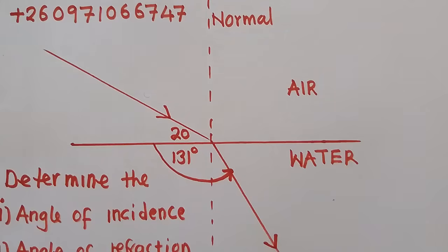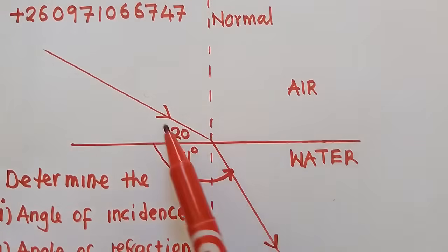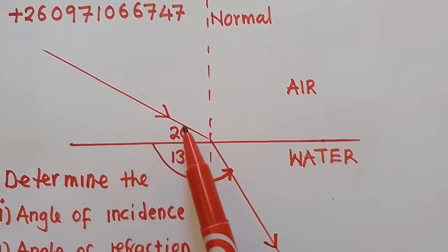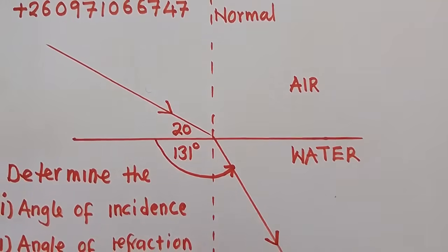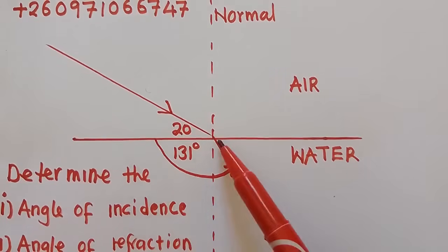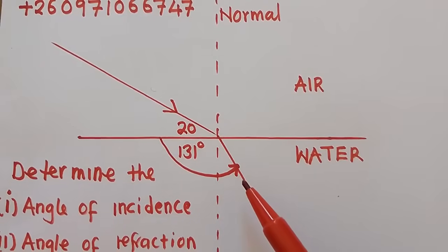Let us look at this diagram that we are given. We've got this ray called an incident ray, and we've got this one going here called a refracted ray. We are given this angle between the surface and the incident ray.